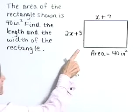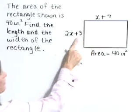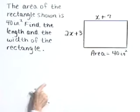In looking at our picture of a rectangle, we see we have a length of x + 7, a width given by 2x + 3, and again that area is equal to 40 square inches.